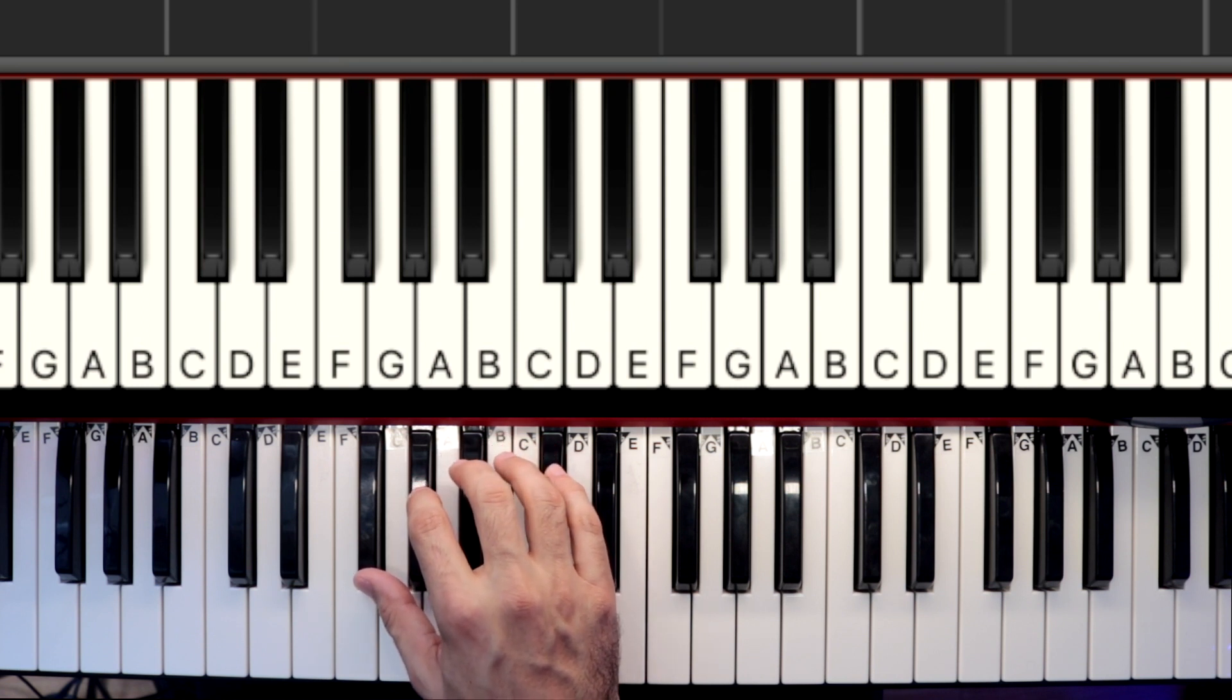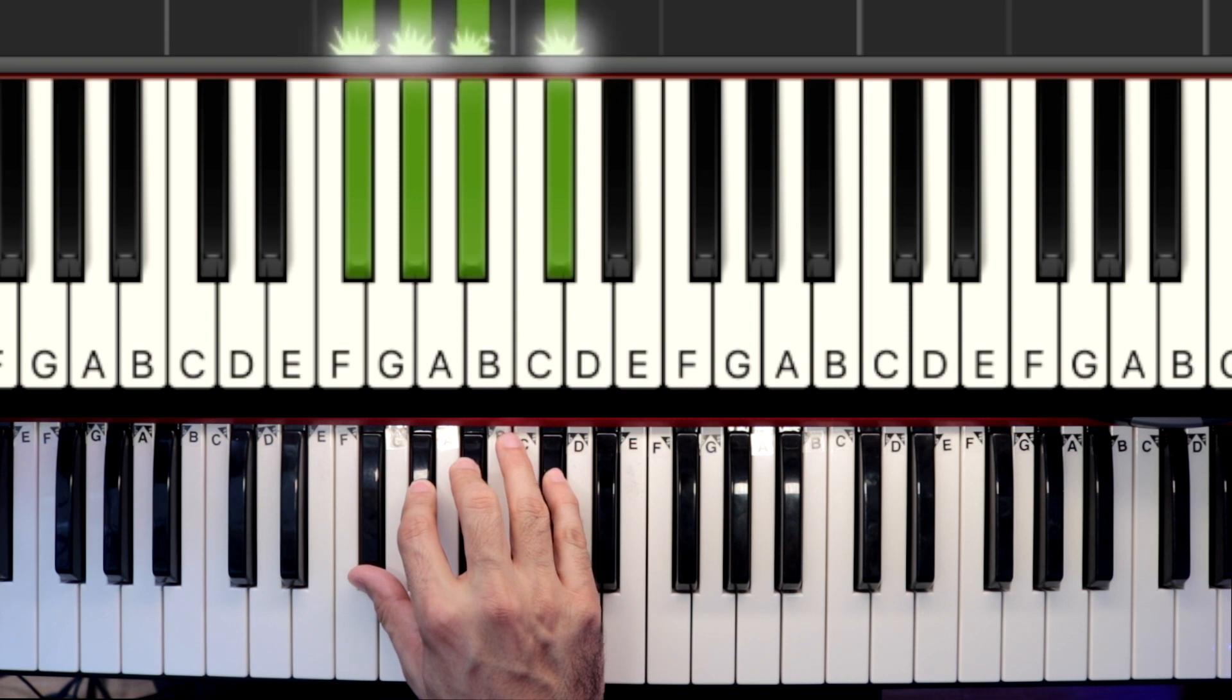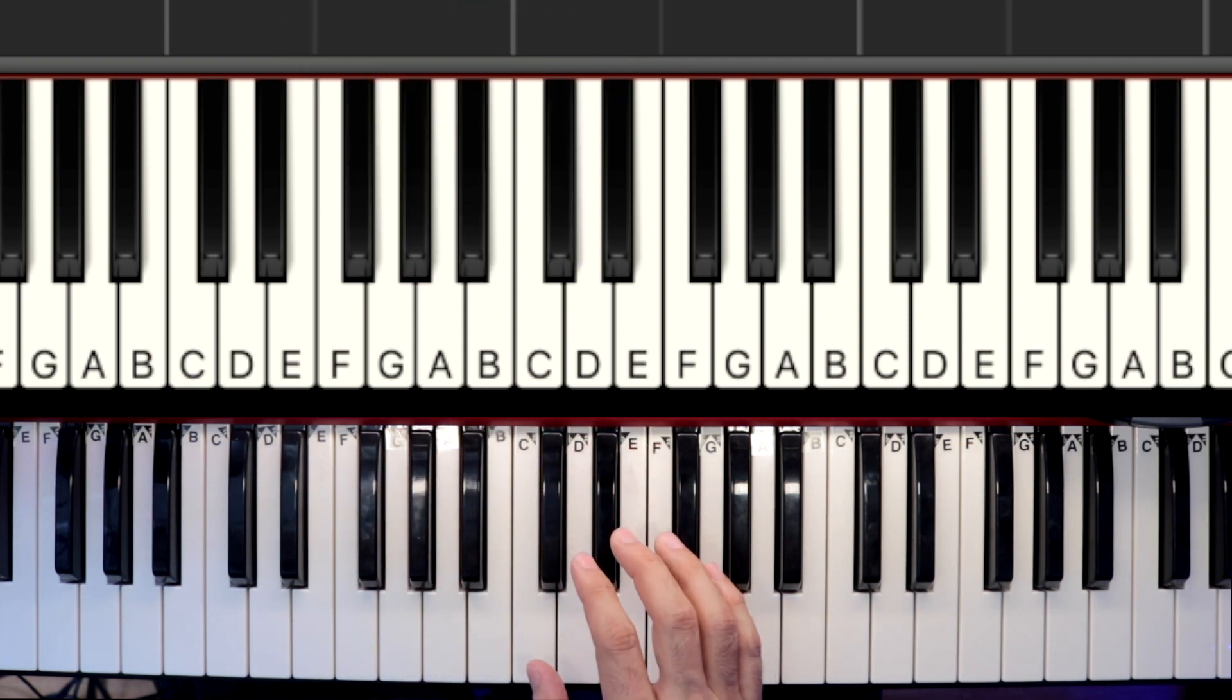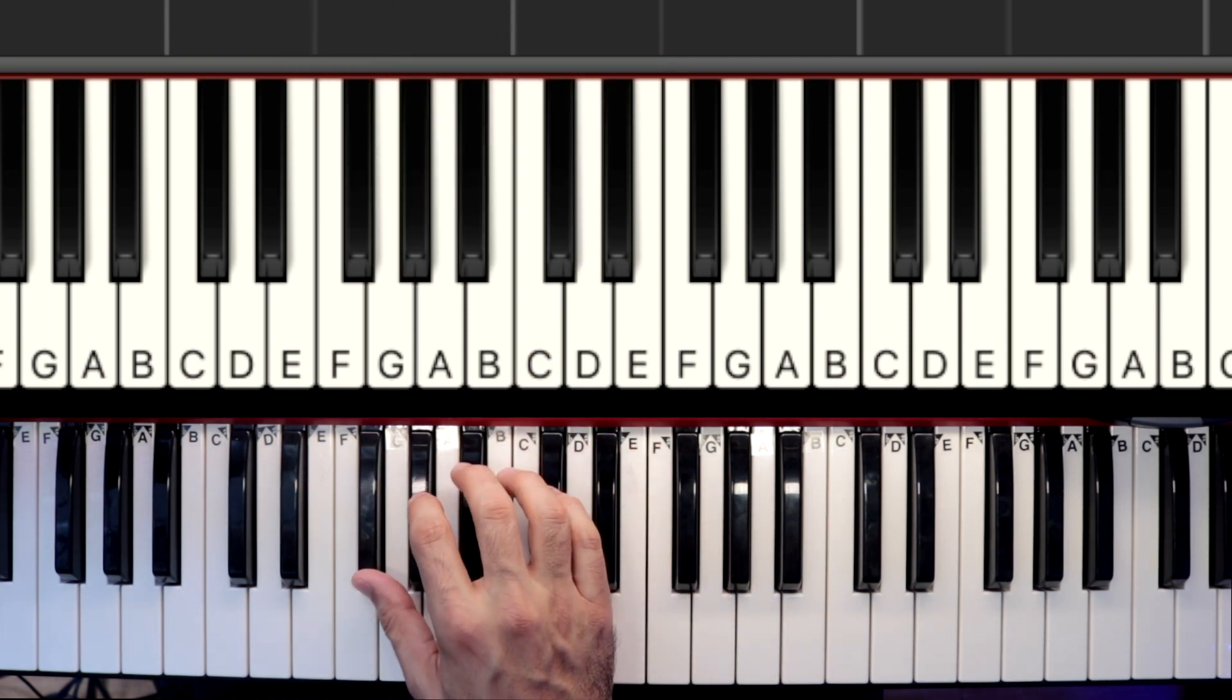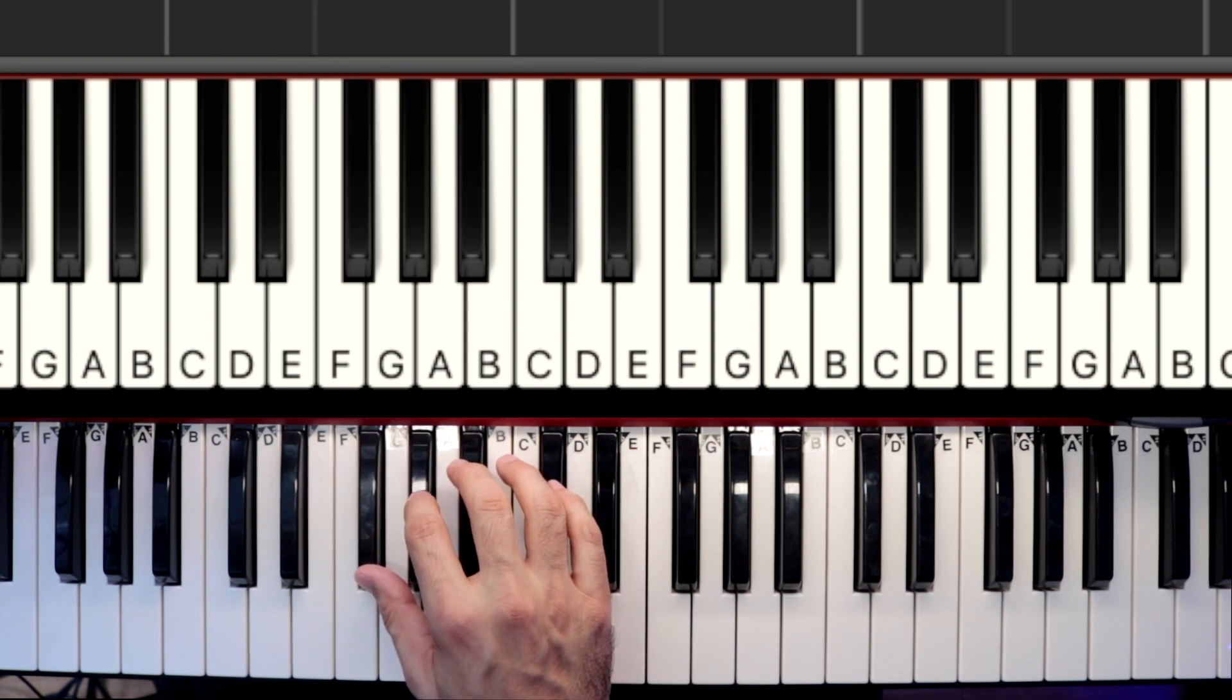So the first one is a G flat major and that's going to be with an added nine so that's G flat, A flat, B flat and D flat. And if you can see I'm here on this middle C so I'm a little bit to the left of middle C playing that first chord. All those four keys go down at the same time and I would suggest do one, two, three and five.